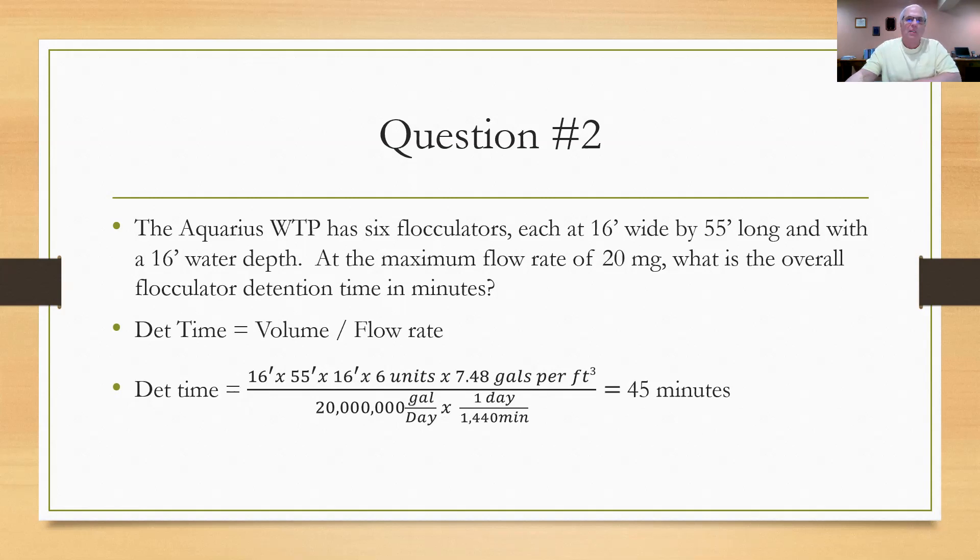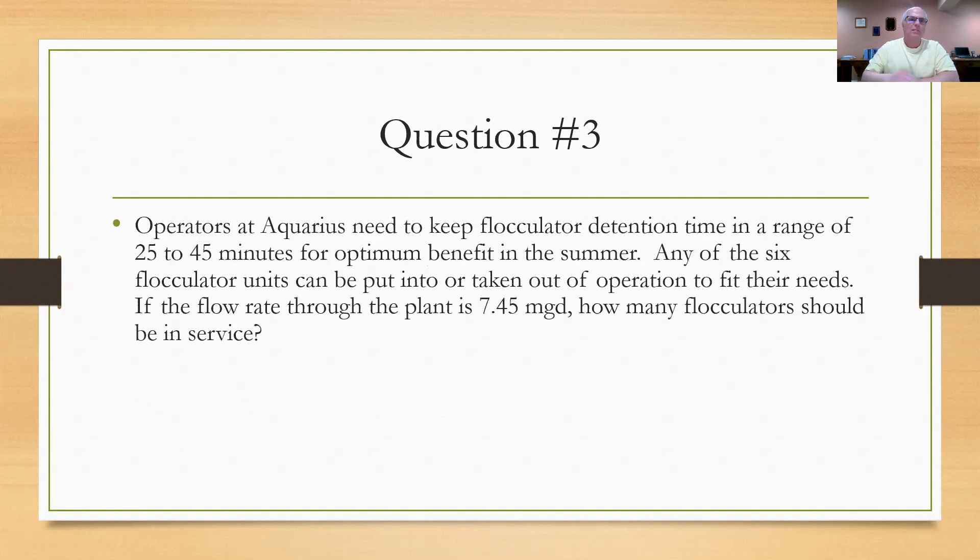But the operators have to make this decision. So I put another problem in that helps us work on that. This problem here says that operators at Aquarius need to keep flocculator detention time in a range of 25 to 45 minutes for optimal benefit in the summer. Any of the six flocculator units can be put into or taken out of service to fit their needs. They've got slide gates that are easily managed by hitting a button. The thing opens up or closes. You can isolate a flocculator to work on it, or you can put it in service very quickly. So the question is, if the flow rate through the plant on a given day is 7.45 mgd, how many flocculators should be in service?